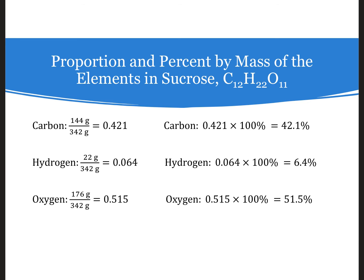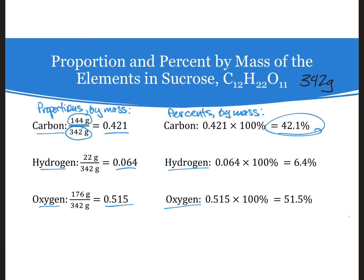If we consider a 342 gram sample of sucrose, we can calculate the mass of carbon, hydrogen, and oxygen present. Carbon has a mass of 144 grams divided by the total sample mass to get a carbon to sucrose ratio of 0.421. If we multiply that ratio by 100%, we see that sucrose is 42.1% carbon by mass. Repeating the process for hydrogen and oxygen, the percentages will add up to 100 if we've done our math right.